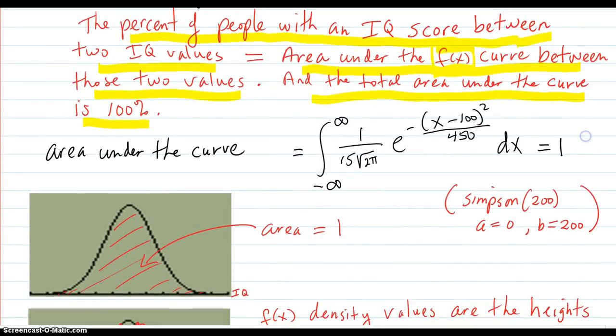So just checking that area under the curve statement for this particular function. If you integrate this from negative infinity to infinity, you'll get one. And I actually put this in the calculator and ran the integral program that we have. And I reported Simpson 200.